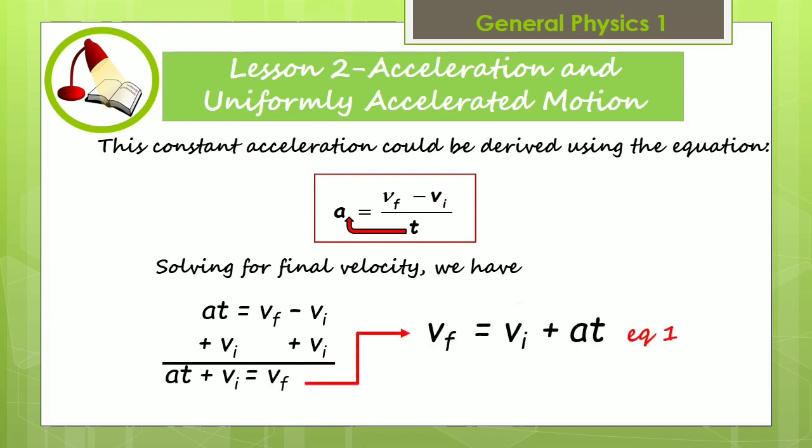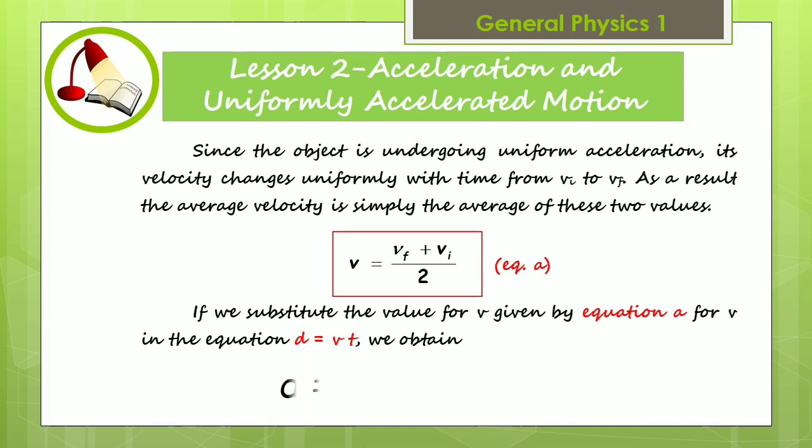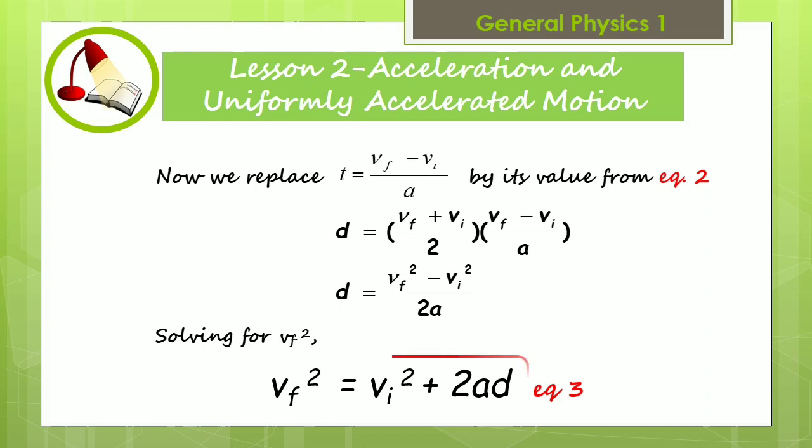Solving for the final velocity, we have the first kinematic equation. If we substitute the value for velocity given by equation a for velocity in the equation distance equals velocity times time, we obtain the second kinematic equation. We replace t equals v sub f minus v sub i divided by acceleration by its value from equation two.